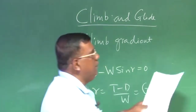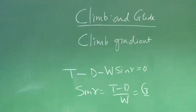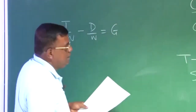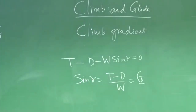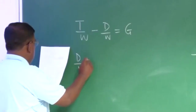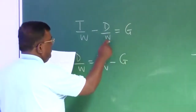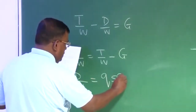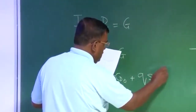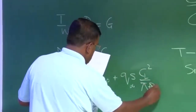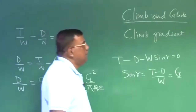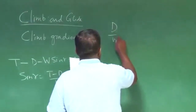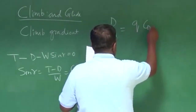There is another term: climb gradient. For a steady climb: T − D − W·sin γ = 0, so sin γ = (T − D)/W, which is referred to as the climb gradient G. From this: T/W − D/W = G. Expressing D/W in terms of W/S: D/W = q∞·CD0/(W/S) + (W/S)·1/(q∞·π·AR·e).